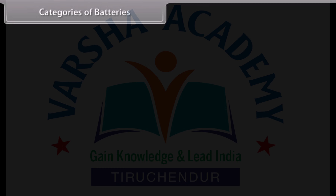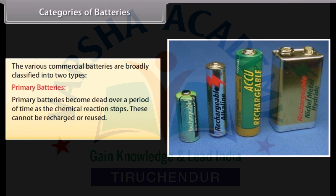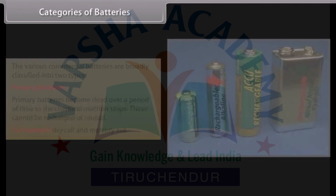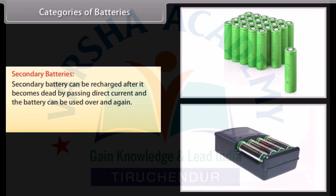Categories of batteries. Commercial batteries are broadly classified into two types. Primary batteries become dead over time as the chemical reaction stops and cannot be recharged or reused — for example, dry cell and mercury cell. Secondary batteries can be recharged after becoming dead by passing direct current and can be used over and again — for example, lead storage battery and nickel-cadmium storage cell.